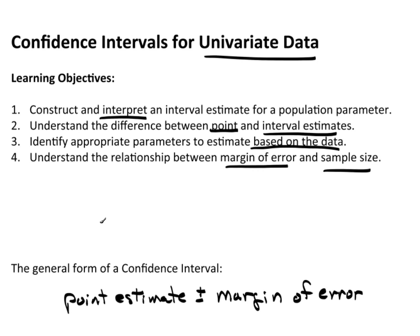That will give us, on a number line, a point estimate. I'm just going to say PE for point estimate right now. If I add the margin of error, I'll be up here on the number line. If I subtract the margin of error, I'll be down here. This forms an interval on the number line. And that's what we're talking about here when we start talking about confidence intervals.